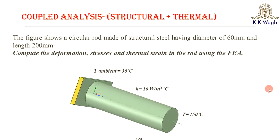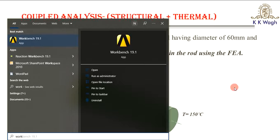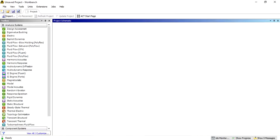Let's open ANSYS Workbench. To open it, click on the Start key and type 'workbench'. You will get Workbench 19.1. Click on it and the window will open. Now you will see the Workbench window.